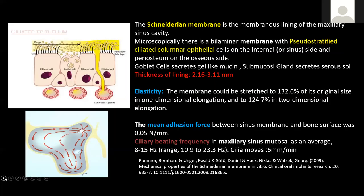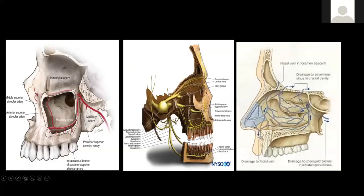Regarding the dental relations of the sinus floor, the most closely approximated tooth is the second maxillary molar, followed by the first molar, third molar, second premolar, first premolar, and lastly the canine. As pneumatization progresses, the sinus floor can come even closer to these dental structures, and invagination of the maxillary sinus between the roots can be seen. Periapical X-rays and evaluation are therefore mandatory when planning extractions or endodontic treatments of these teeth.